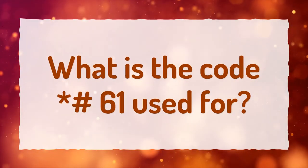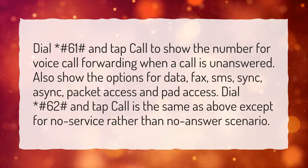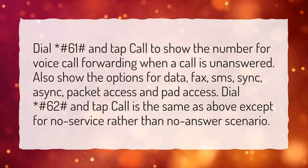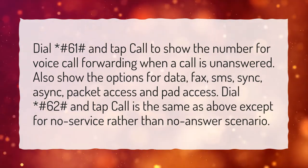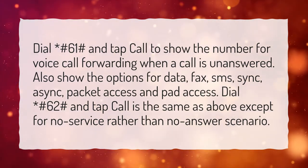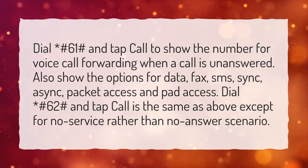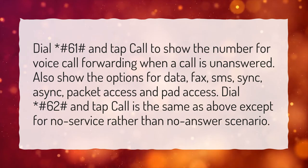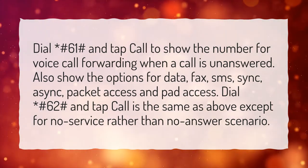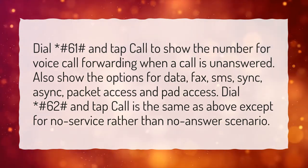What is the code asterisk hash 61 used for? Dial asterisk hash 61 hash and tap call to show the number for voice call forwarding when a call is unanswered. It also shows options for data, fax, SMS, sync, async, packet access, and pad access. Dial asterisk hash 62 hash and tap call for the same information, except for a no-service rather than no-answer scenario.